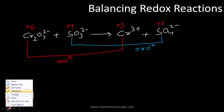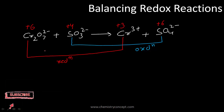The next step is to balance all atoms other than oxygen and hydrogen. Sulfur is already balanced on both sides. Chromium has 2 atoms on the reactant side but only one on the product side, so we place a coefficient of 2 there. Now, from +6 to +3, chromium gains 3 electrons per atom, and with 2 chromium atoms, that's 6 electrons total involved in the reduction.